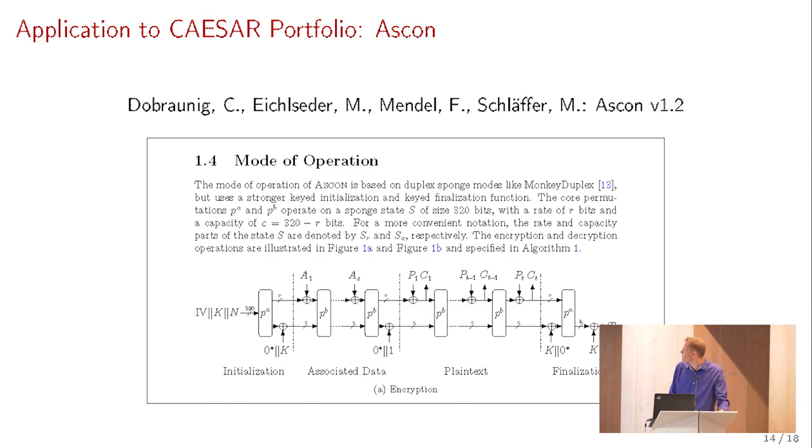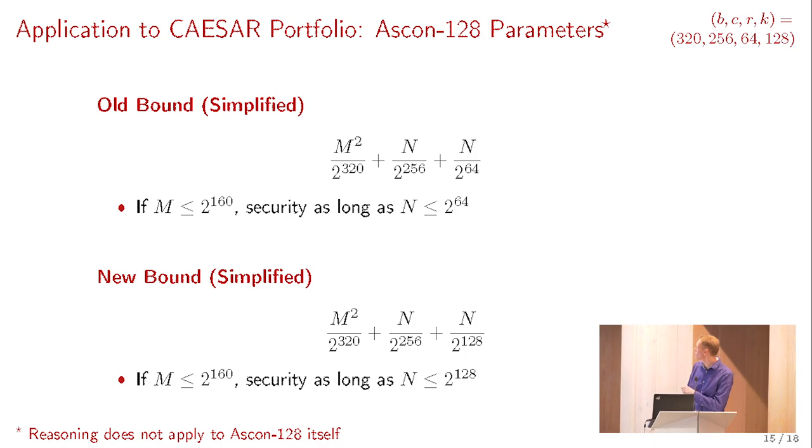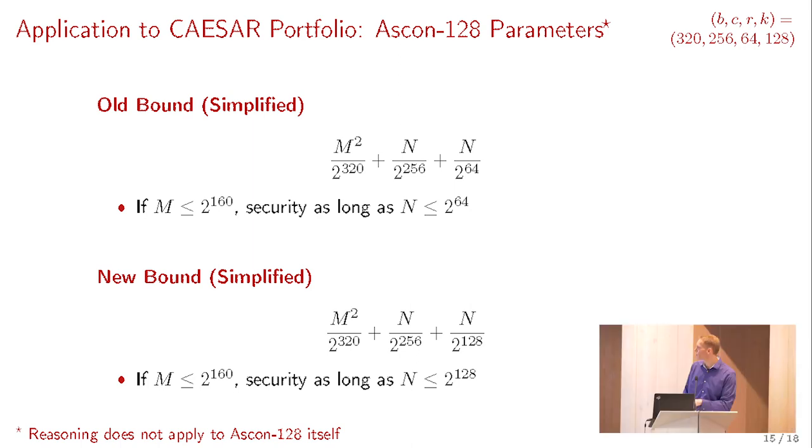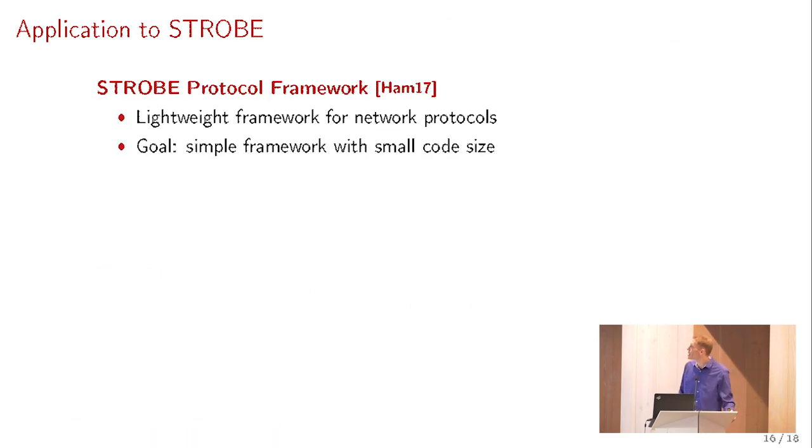I don't want to oversell by saying that our results apply to ASCON and Keyak. They don't apply to ASCON and Keyak, because the analysis was already good enough. However, if you still look at, for instance, the ASCON parameters, so if you take the ASCON parameters with 320, 256, 64, and 128, which is the example which you saw a couple of slides back, then this would be the old bound, so M squared over 2 to the B, N over 2 to the C, plus N over 2 to the R over 2, so N over 2 to the 64, and the new bound would basically improve it to N over 2 to the 128. Intuitively, if you limit the online complexity to 2 to the power of 160, the old bound would give security as long as the offline complexity is 2 to the 64, and the new bound would give security as long as the offline complexity is at most 2 to the 128.